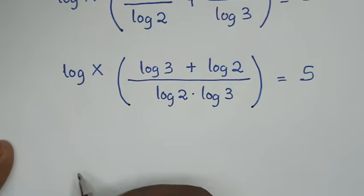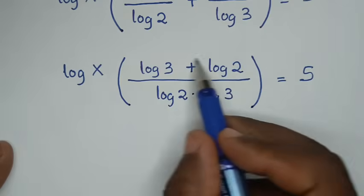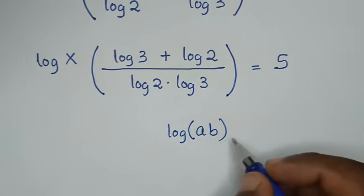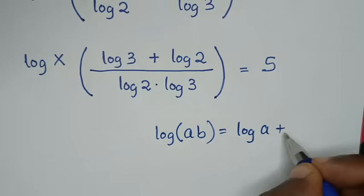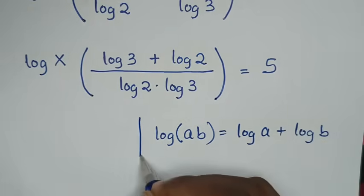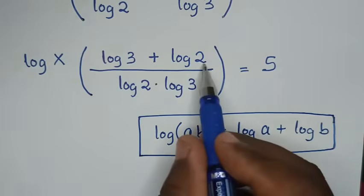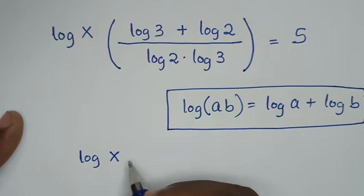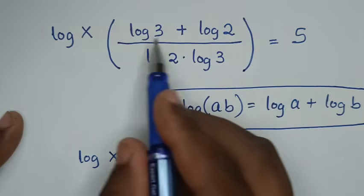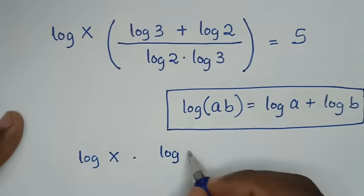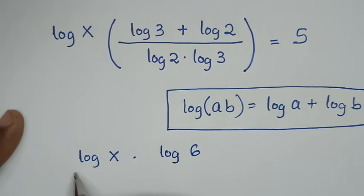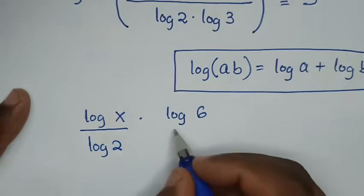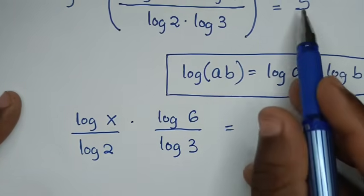In the next step we have log of 3 plus log of 2. This part is in the form of the rule log of a times b equals log of a plus log of b, so we apply this rule. The expression log of 3 plus log of 2 becomes log of 3 times 2, which is log of 6. So it will be log of x times log of 6 over log of 2 times log of 3, equal to 5.